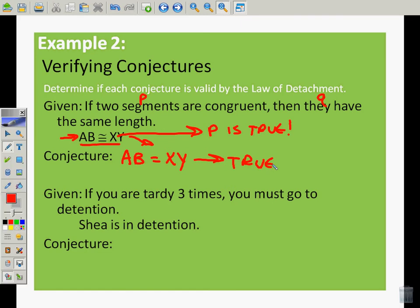Given: if you are tardy three times, you must go to detention. If P, then Q. Is P true? Well, this isn't even P. That's not P, that's more like Q. So we've said that Shea is in detention. Well, if she's in detention, she might have been tardy three times. But she also might have been fighting, she might have cheated on a homework assignment, she might have been something else. So the conjecture is that she was tardy three times. The conjecture is she was tardy three times, but this is not true. Because we've detached the two clauses and we've found that it's not true, because she could be in there for something else. So we're using logic to evaluate these statements.